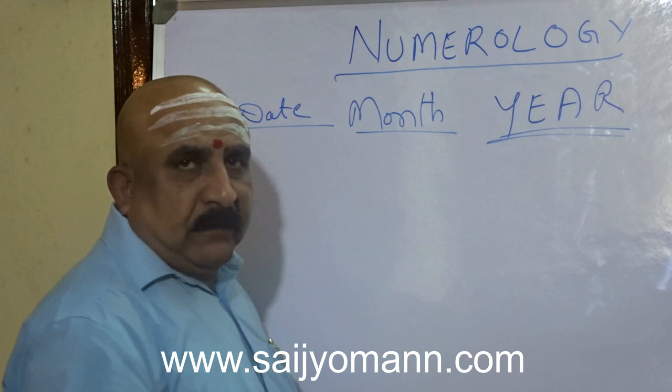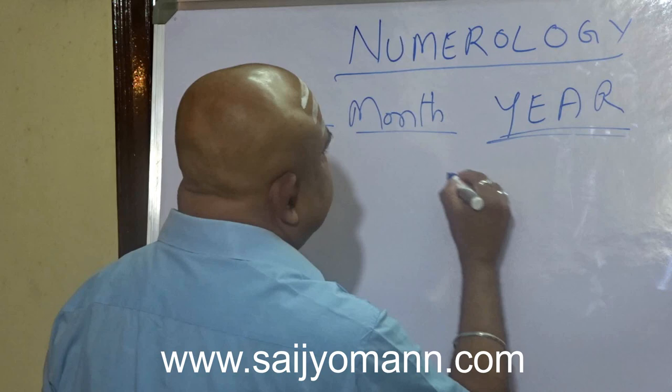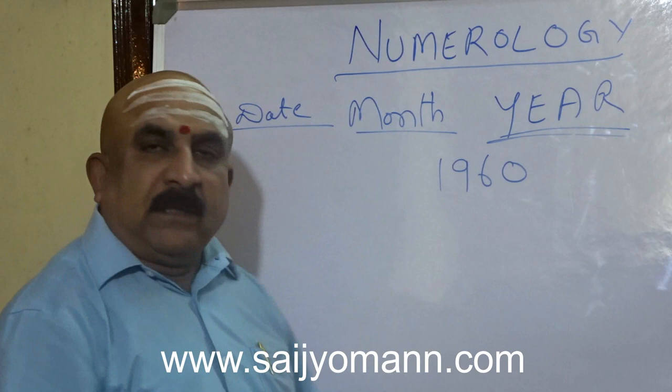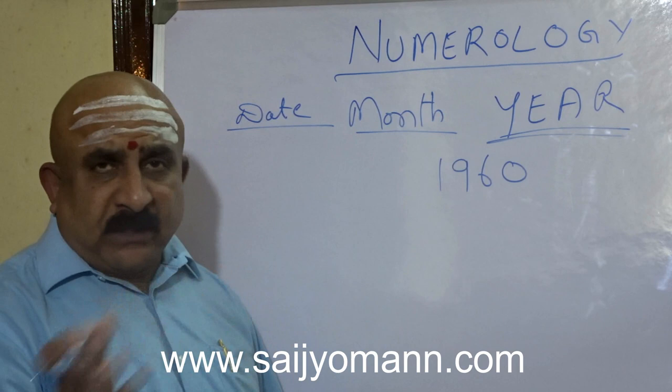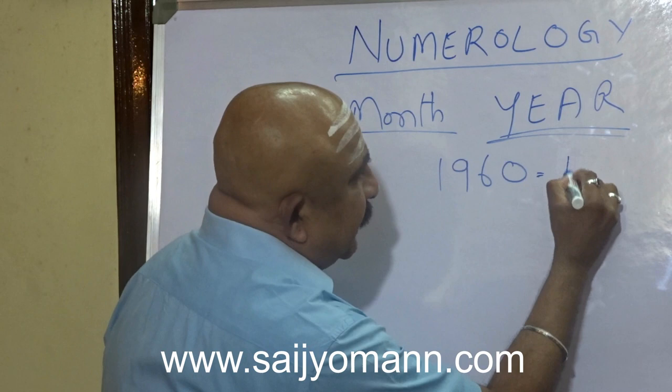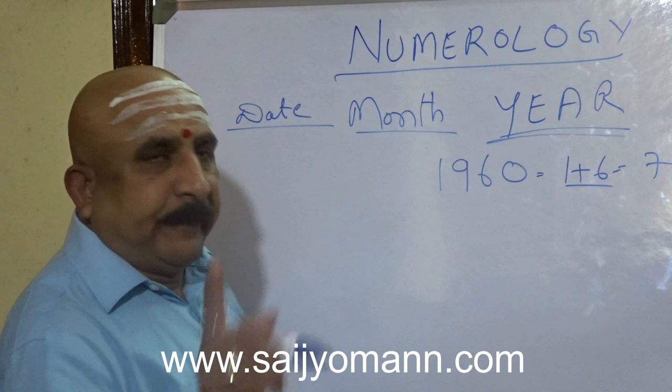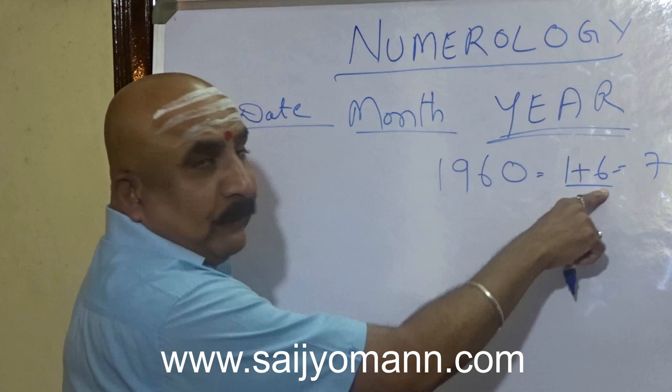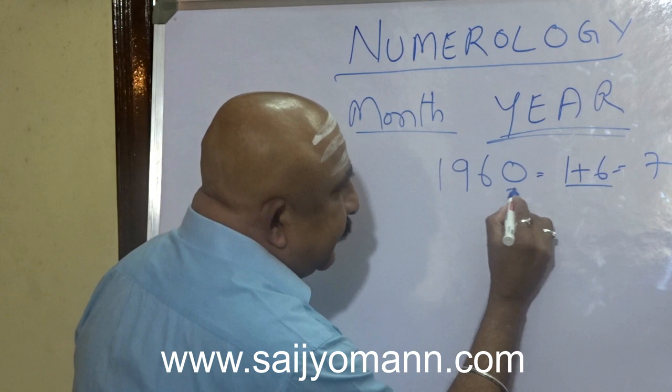Let us take a vague year of birth: 1960. In numerology, you always bring everything to a single digit. So: 1 plus 9 equals 10, plus 6 equals 16, and 1 plus 6 equals 7. The single digit for 1960 is 7.